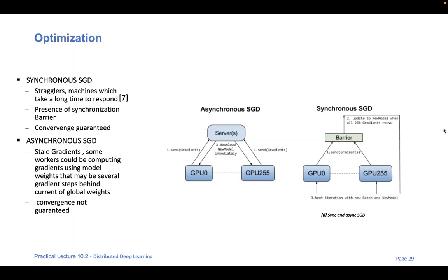Hi everybody. Before going on with the second part of this lecture, I want to recap again what the main topic of today's lecture is, which is distributed deep learning. In the first part I explained why we need distributed deep learning: models and datasets are becoming bigger and bigger, and it's not feasible to train such large models on just one single GPU device. We need to scale these on much larger infrastructures, and to do so we need to deal with multiple technical and scientific problems.